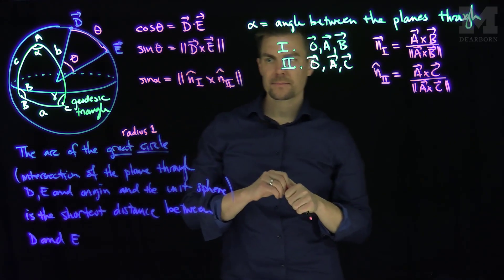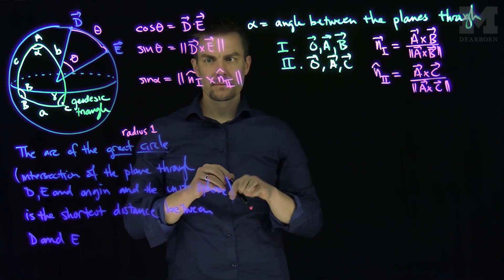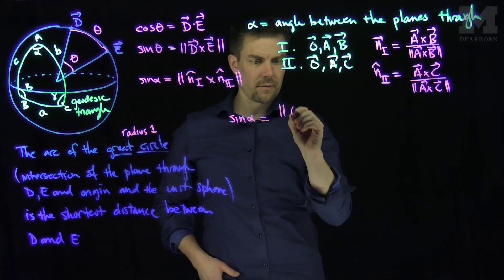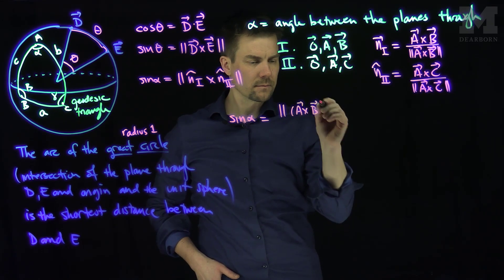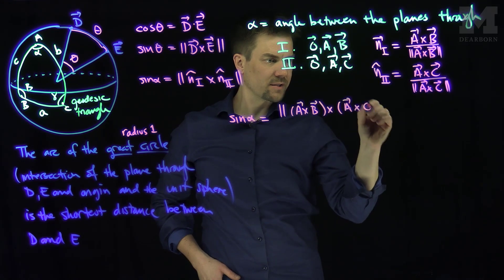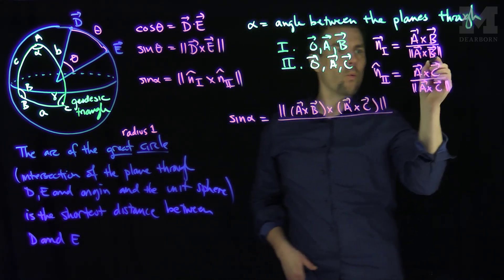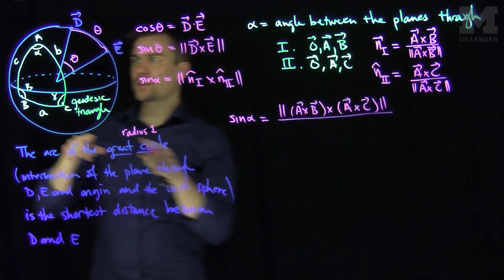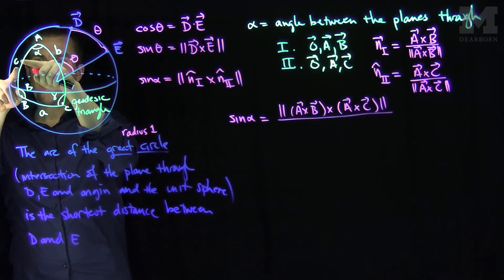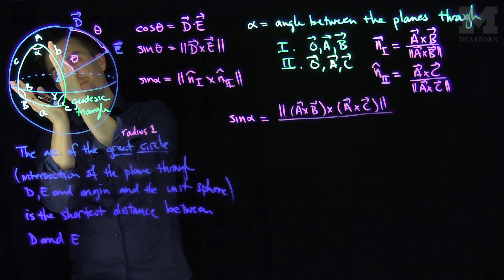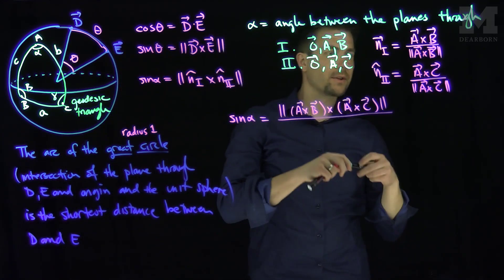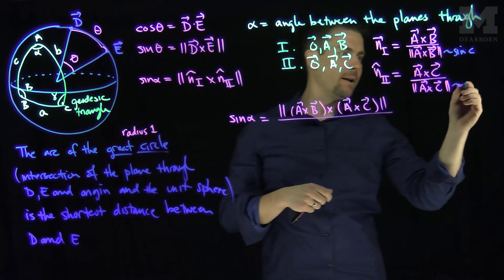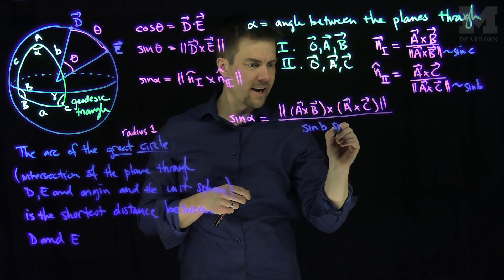Let's expand this. The sine of alpha is the length of (A cross B) cross (A cross C), divided by the denominator. The length of A cross B is the sine of the angle between A and B, which corresponds to side c, so that's sine of c. The length of A cross C corresponds to side b, so that's sine of b. So the denominator is sine of b times sine of c, and we need to simplify the norm of the numerator using the BAC-CAB identity.